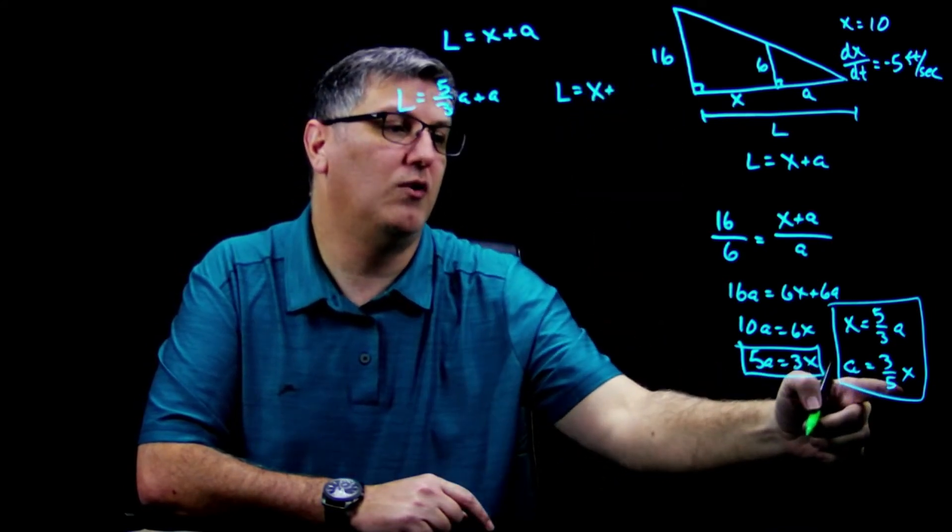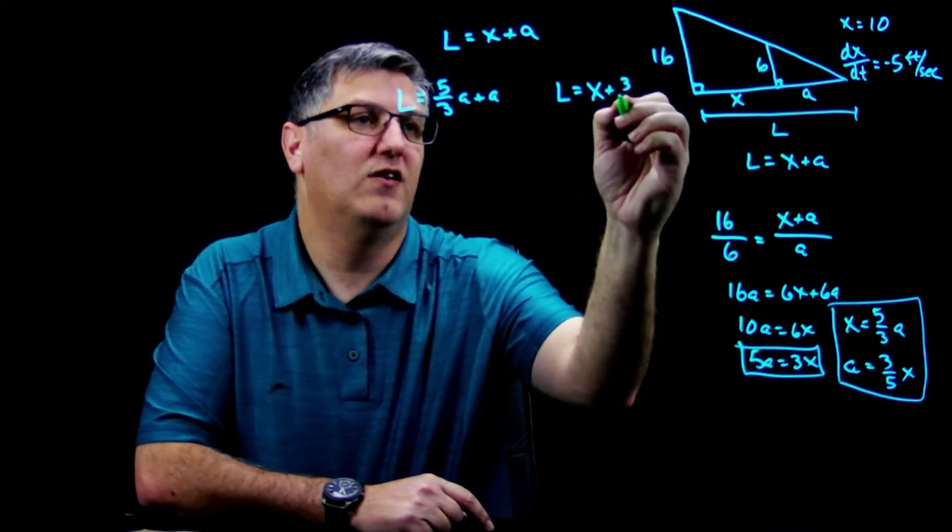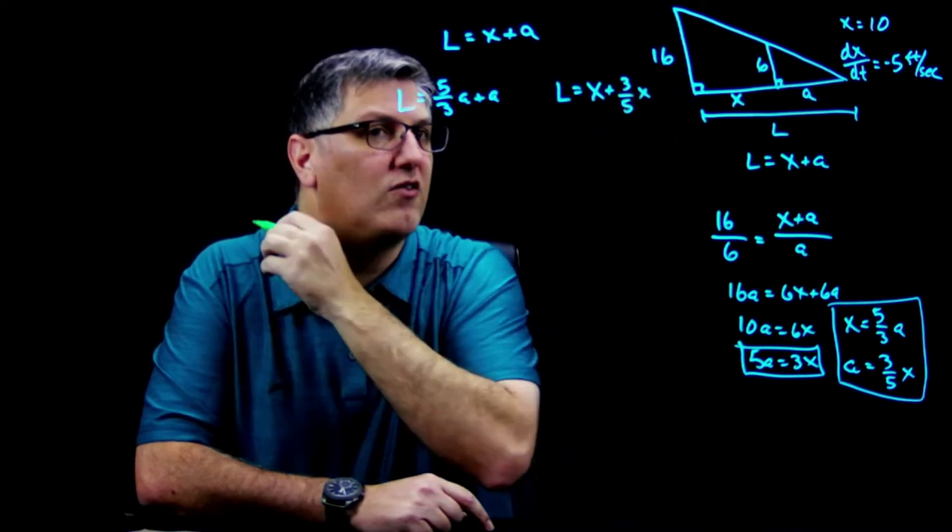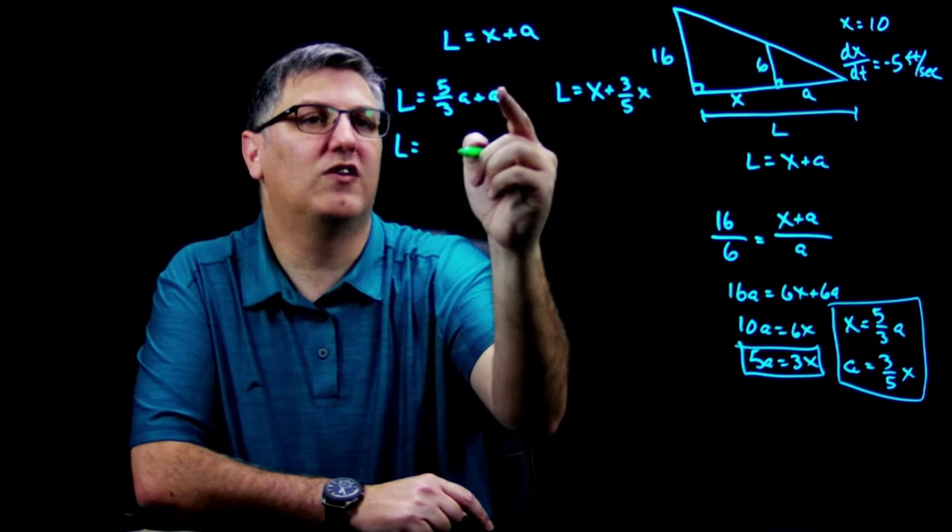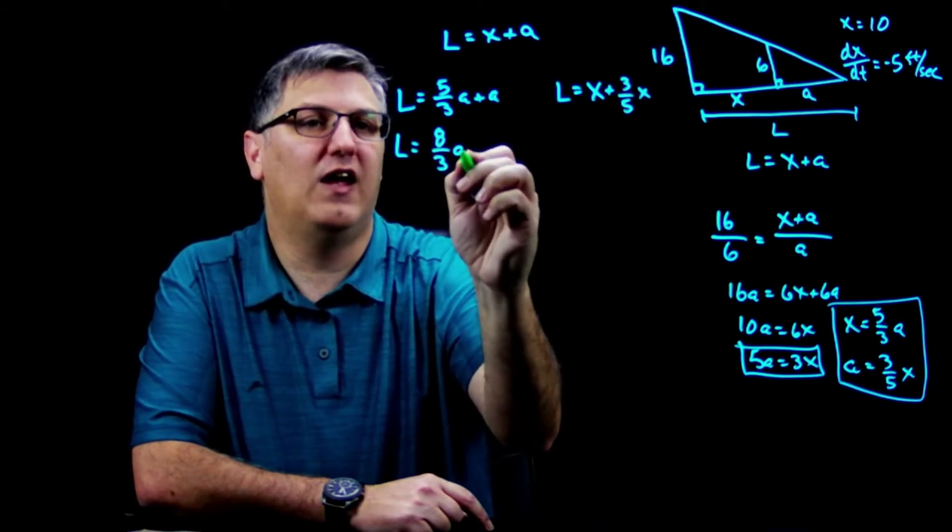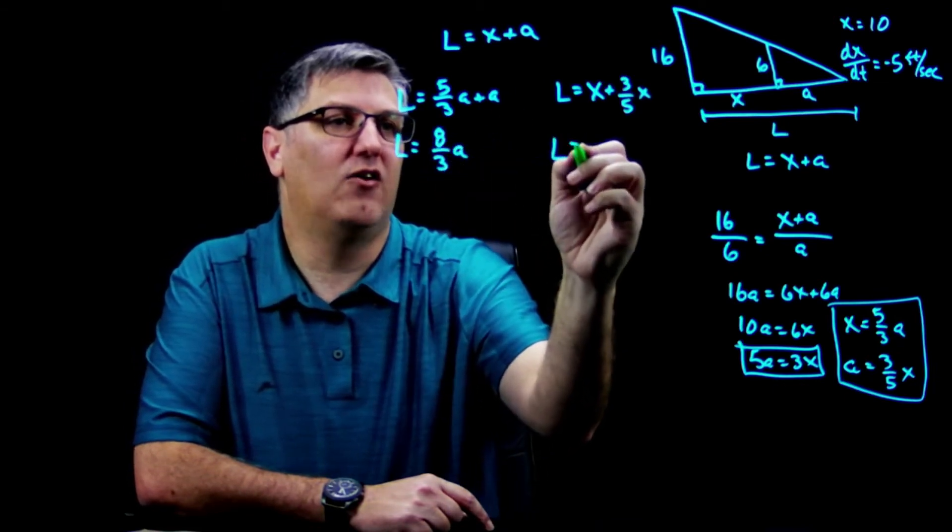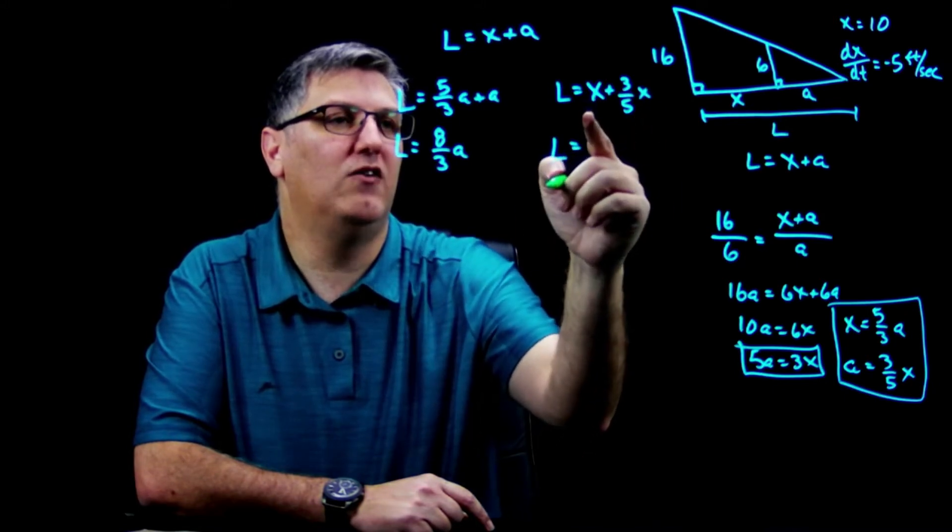And I have L equal, we know that x plus, well we know a is three fifths x. So I can combine these and I'll get L equals, let's see, this is going to be eight thirds a. This L over here when I combine these is going to be eight fifths x.